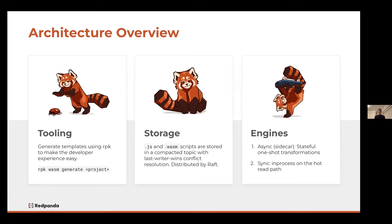From a tooling perspective, Red Panda comes with a command line tool called RPK. The idea is to make the developer experience as easy as possible. You can run RPK WASM generate, and the command line tool will create boilerplate code for you — you'll have the WASM API that Red Panda provides with lots of templated code. You can complete your function and deploy that module into your streaming platform. From a storage perspective, those functions — whether JavaScript or Wasm modules — are stored within a compacted topic within Red Panda, and we can leverage Raft to replicate those functions to every server in the cluster.